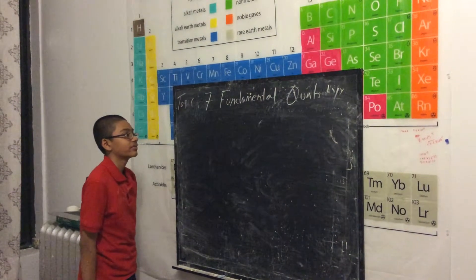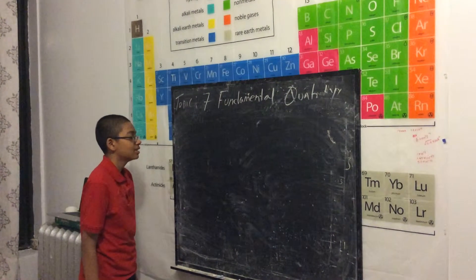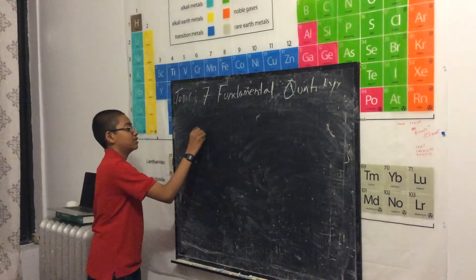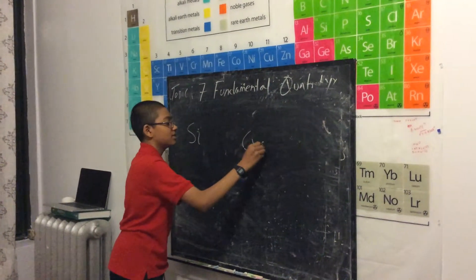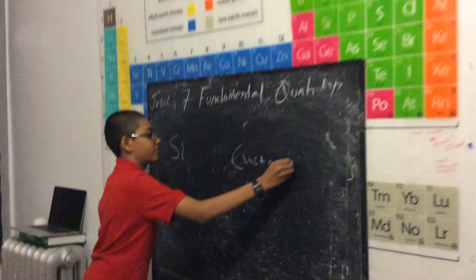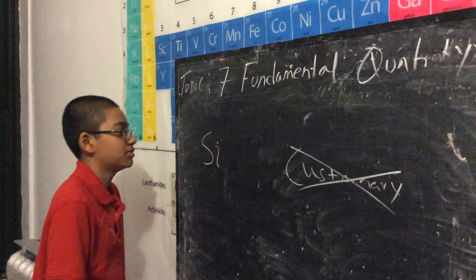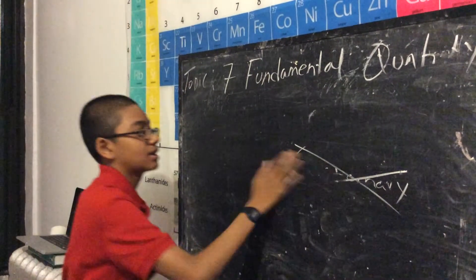Today we're going to talk about the seven fundamental quantities. So we can measure either SI units or customary units, but most real physicists don't use customary units, so we're going to keep using the SI units.